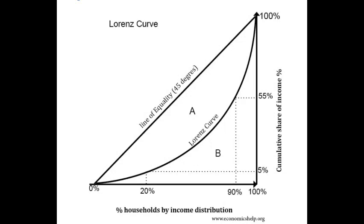Let me explain how to use this with an example. Let's say we want to find out how much 20% of the population makes. We look at the x-axis and plot a straight line up to the Lorenz curve, then draw a horizontal line from that point on the Lorenz curve to the y-axis. Where the horizontal line touches the y-axis, you have the percent income that 20% of the population makes.